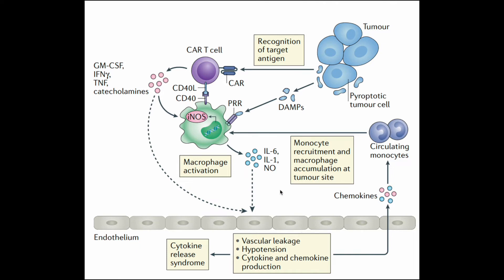The CAR T-cells were initially expected to directly attack the tumor cells and kill them. However, these inflammatory markers result in the recruitment of circulating monocytes, resulting in macrophage activation. This is driven by the CAR T-cells themselves as well as the released cytokines. Additionally, damaged tumor cells release DAMPs — damage-associated molecular patterns — which also activate macrophages. These activated macrophages release interleukin-6, interleukin-1, and nitric oxide, resulting in vascular leakage, hypertension, and more cytokine production — that is the cytokine release syndrome.